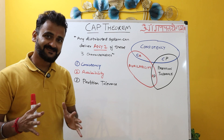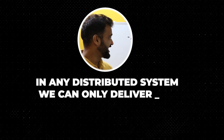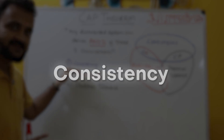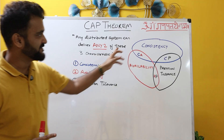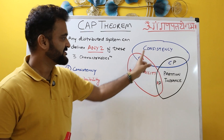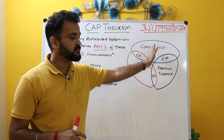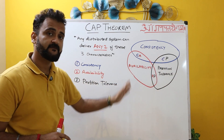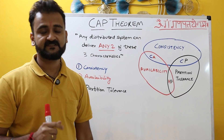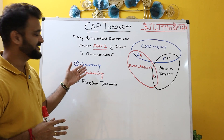CAP theorem states that in any distributed system, we can only deliver any two of these three characteristics: Consistency, Availability, and Partition Tolerance. As you can see in this Venn diagram, either we can choose consistency and availability and let go of partition tolerance, or we can go with consistency and partition tolerance and let go of availability. We have to make that trade-off based on the requirement and the business case we have. So let's understand what each one is exactly.